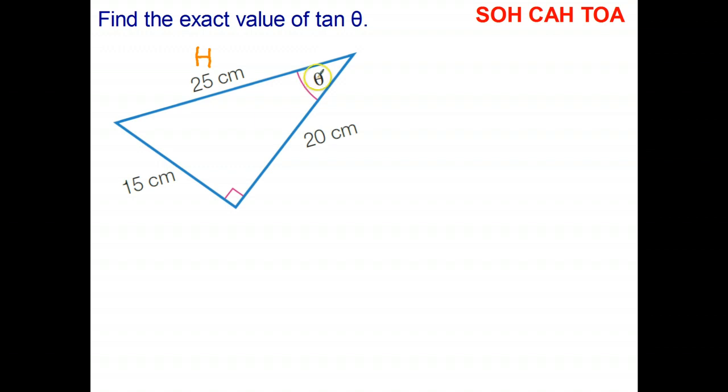And the side that is next to the angle of interest is the adjacent side. So always start by writing down O, H, and A on the appropriate sides of the right angle triangle.